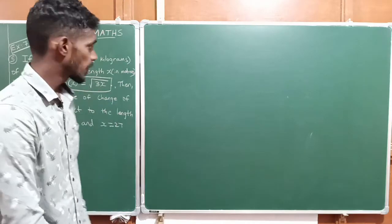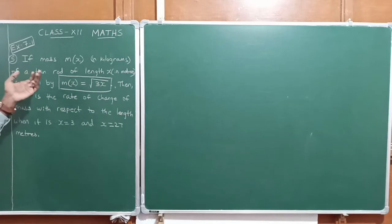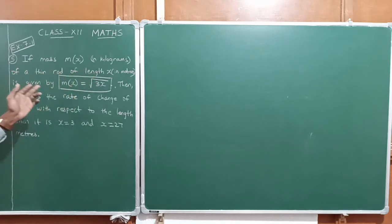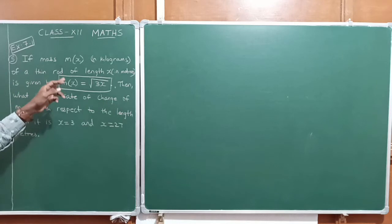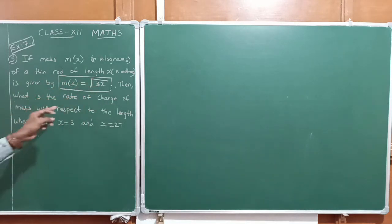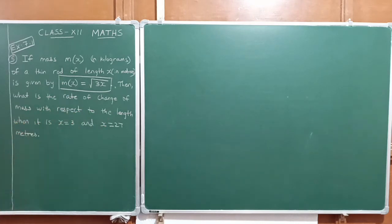Hi students, let us continue the exercise number 7.1, fifth question. If the mass m of x of a thin rod of length x is given by m(x) = √(3x), then what is the rate of change of mass with respect to the length when x is equal to 3 and x is equal to 27 meters.